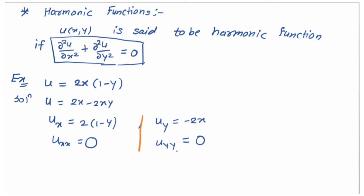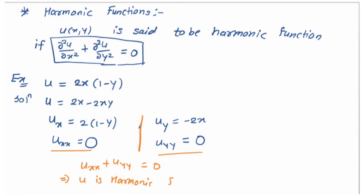Both second derivatives are 0 here — it is not necessary that they are always 0. Since both terms are 0, their addition is also 0. This means u is a harmonic function.